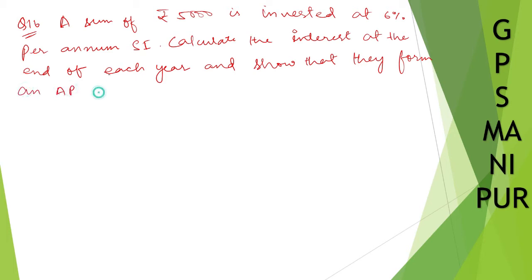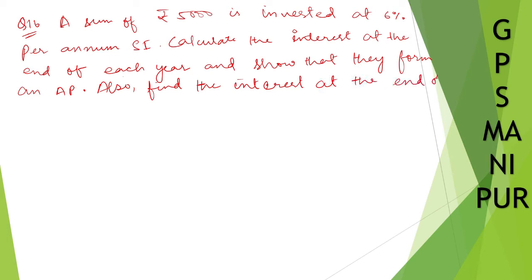Also find the interest at the end of the 25th year. A sum of rupees 5,000 is invested at 6% per annum simple interest. So, calculate the interest at the end of each year.